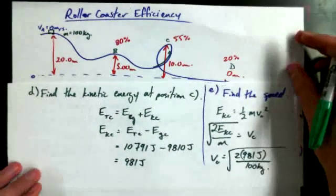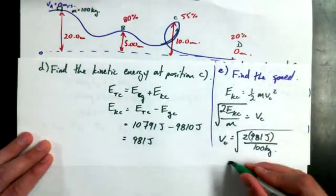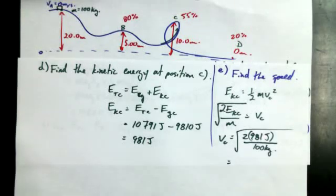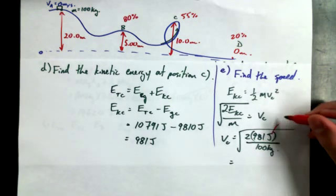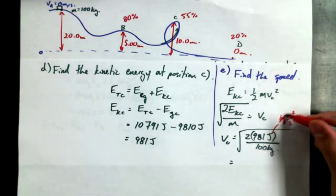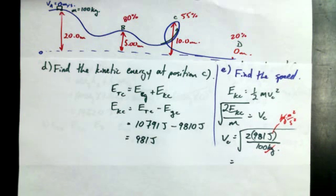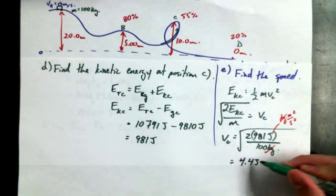And I'm not going to do the unit analysis to show that that works out to being meters per second. We've done that enough times now. Although you might be asked to someday on an evaluation. Wouldn't you have an extra kilogram? Okay, let's deal with the unit analysis. Joules is kilogram meters squared per second squared. Kilograms cancel. You're left with meters squared per second squared. It always works out. It's like mathematical. VC is 4.43 meters per second.